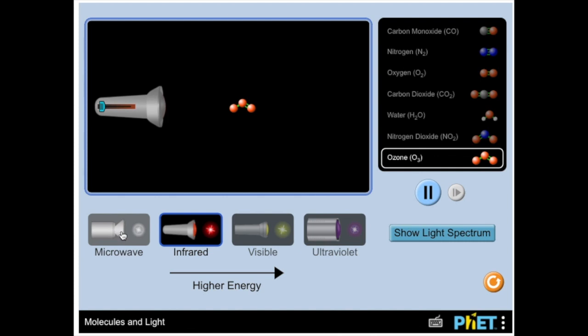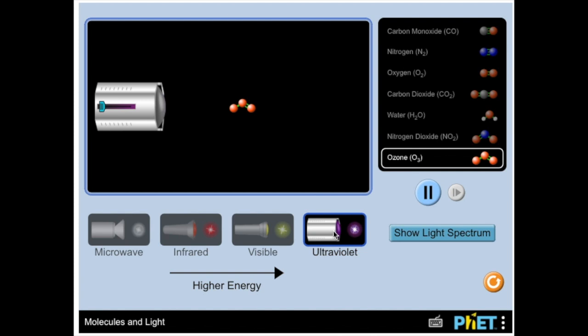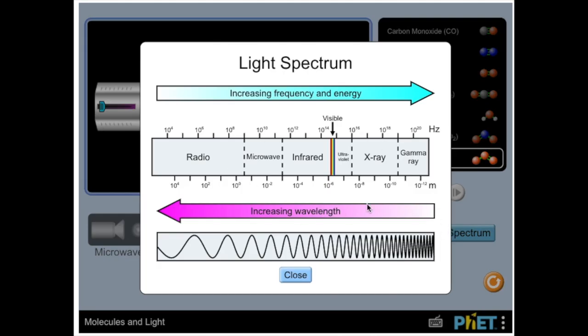Down below, you can see the different types of wavelengths getting higher and higher in energy, starting with microwaves to infrared, visible light so what we see ROYGBIV, up to ultraviolet light. If you click on the show light spectrum, you can see what hopefully looks familiar now at this point, the entire spectrum.